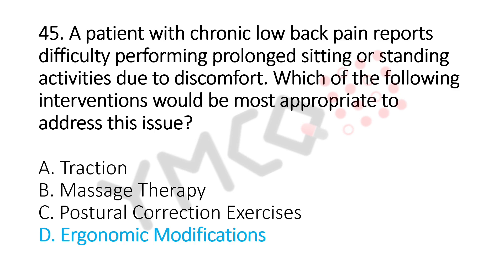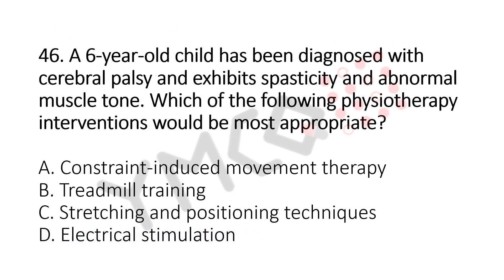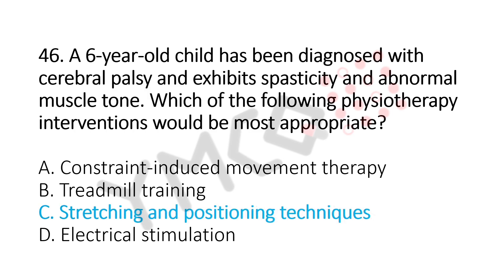Now let's move to question number 46. A 6-year-old child has been diagnosed with cerebral palsy and exhibits spasticity and abnormal muscle tone. Which of the following physiotherapy interventions would be the most appropriate? Option A, constraint-induced movement therapy. Option B, treadmill training. Option C, stretching and positioning techniques. Option D, electrical stimulation. And the answer is Option C, stretching and positioning techniques.